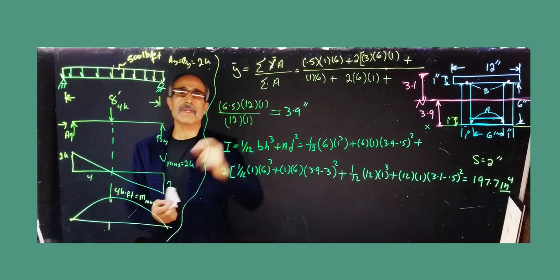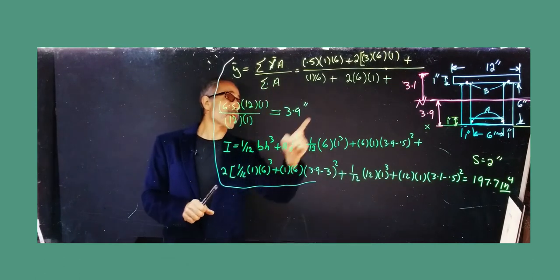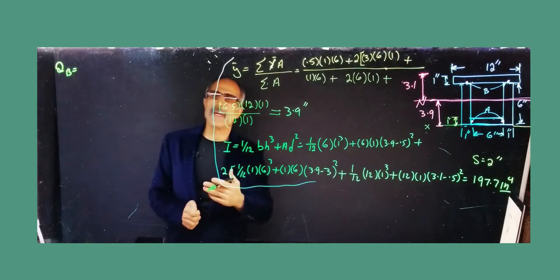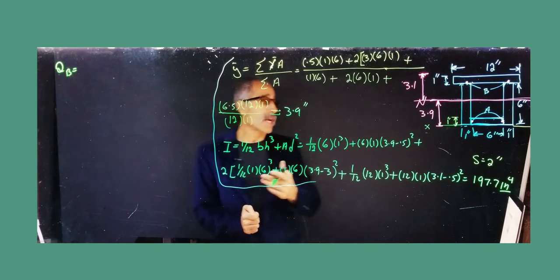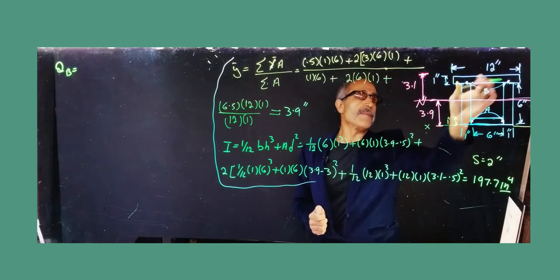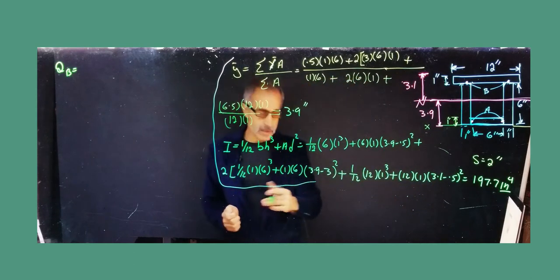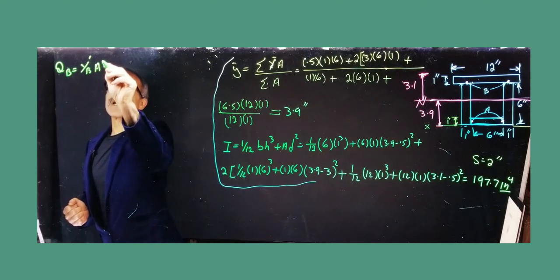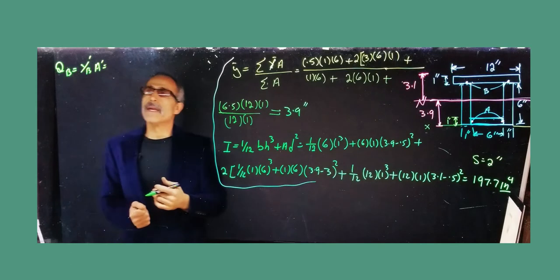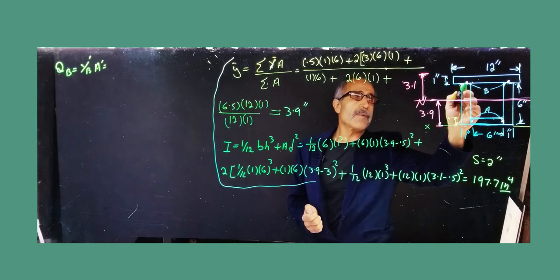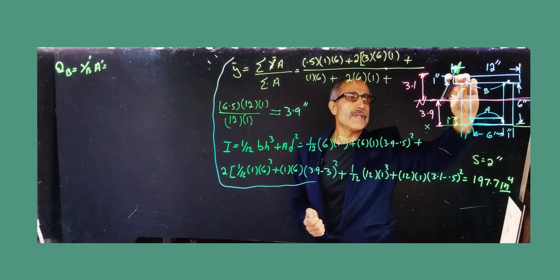Now we look for Q_b and Q_a. Please review from the last lecture how we calculate Q — it's very important. Q_b applies to the top board. The equation is Q = y'_b × A', where A' is the area above the point of interest and y' is the distance from the centroid of that area to the neutral axis. The point of interest is where the nail connects — right between those two pieces.